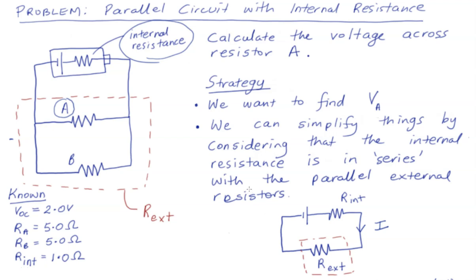Our known data: we know that the open circuit voltage was 2 volts, and both resistor A and resistor B have 5 ohms of resistance, and the internal resistance is also given as 1 ohm.